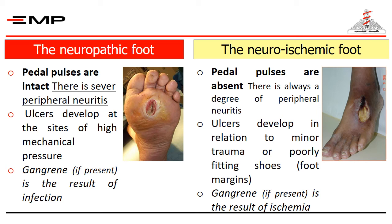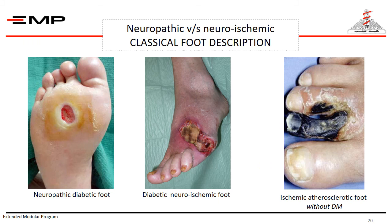On the other hand, in the neuro-ischemic foot, the pedal pulses are absent. Of course, there is always a degree of peripheral neuritis. Ulcers develop in relation to minor trauma or poorly fitting shoes, and occur commonly at foot margins. Gangrene, if present, is the result of ischemia, and infection accelerates tissue necrosis.